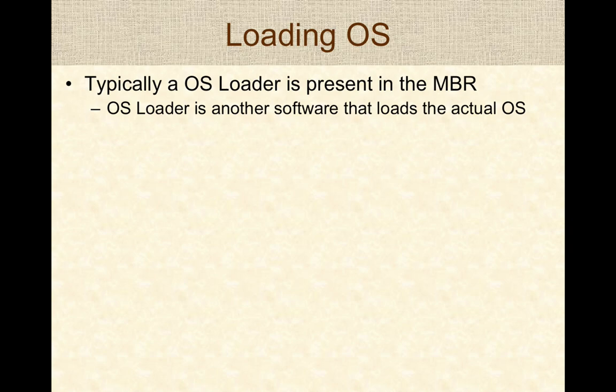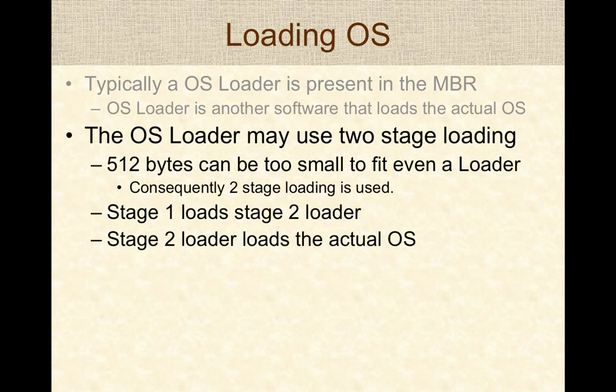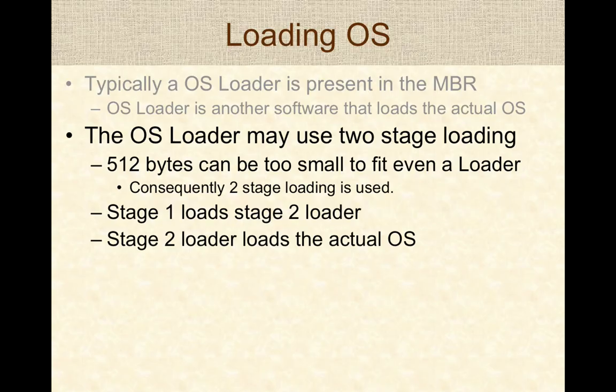Typically, an operating system loader is present in the MBR. The OS loader is another piece of software that loads the actual operating system. The OS loader itself may use two stages in loading, because the initial 512 bytes can be too small to fit the loader itself. Most modern operating systems use a two-stage loading process: a stage 1 loader fits in the 512 bytes and is only designed to load the stage 2 loader, which is a more full-fledged program that can handle the intricacies of file systems and load the actual operating system into memory.